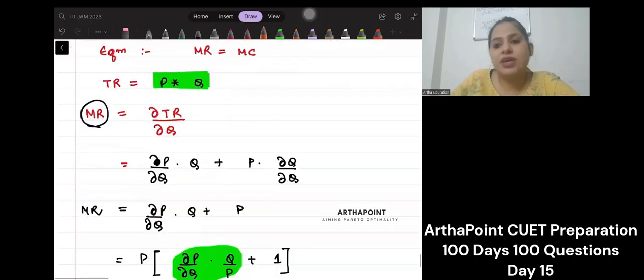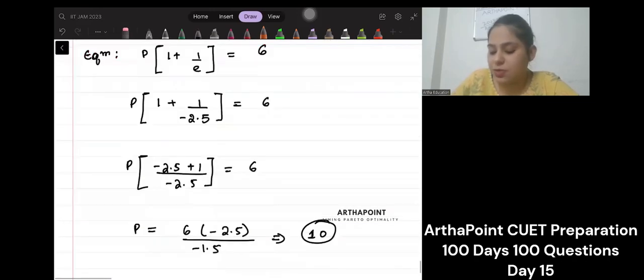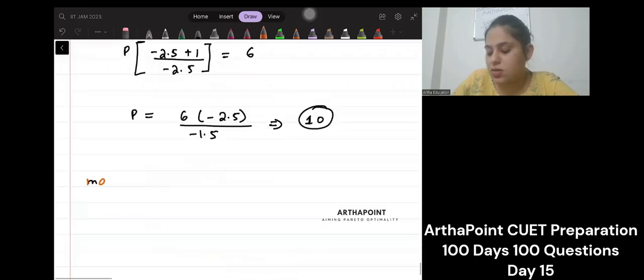So can you tell me what would be the markup of the monopolist? The markup of the monopolist will be 10 minus 6, isn't it? So which means that this markup will be 4 rupees. I am charging 4 rupees over my cost.